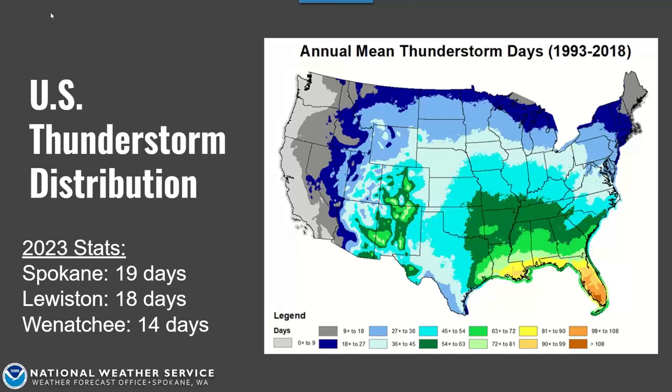Moving on to thunderstorms. Here is a map of annual thunderstorm days across the country — the Southeast U.S. is the thunderstorm mecca. We do see thunderstorms across the Pacific Northwest and Inland Northwest, with most of Washington ranging from zero to 18 days. Looking back at last year, Spokane had 19 days with a reported thunderstorm at the airport, Lewiston had 18 days, and Wenatchee had 14 days — a little bit more than the typical mean average. Every year is different and it'll be interesting to see what this year holds.